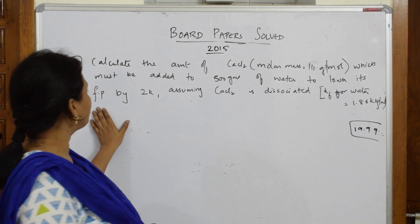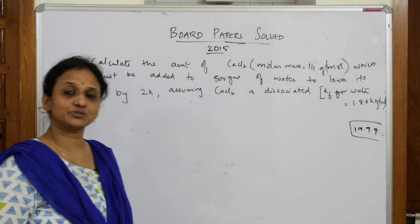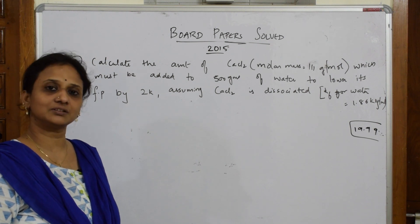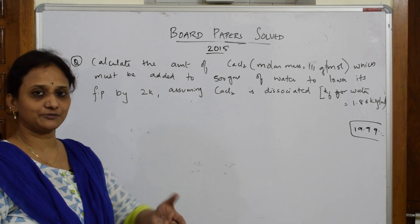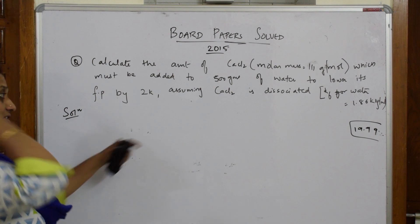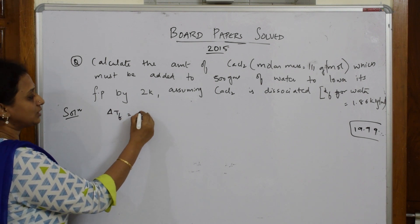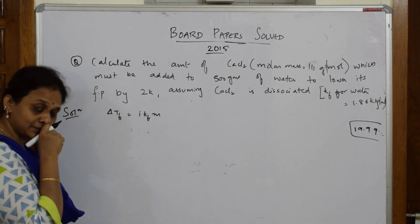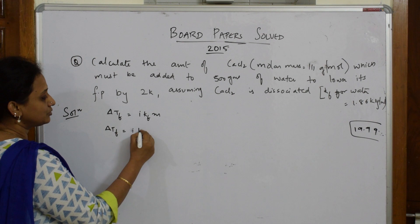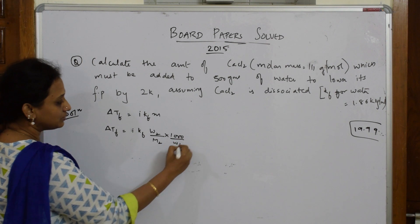The question asks: calculate the amount of CaCl₂ (molar mass given) which must be added to 500 grams of water to lower its freezing point by 2 Kelvin, assuming calcium chloride is fully dissociated. They've given both the Van't Hoff factor aspect and the freezing point depression — a colligative property. The formula to use is: ΔTF = i × KF × molality, which expands to i × KF × (W₂/M₂) × (1000/W₁).